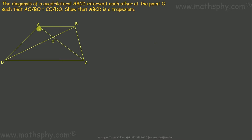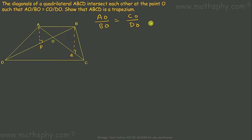To do that, let's draw two perpendiculars: one from A onto BD, call it P, and one from B onto AC, call it Q. Both are perpendiculars, meaning 90 degrees. We have AO over BO equals CO over DO. Rewriting this, AO·DO equals CO·BO, which gives us DO over OB equals CO over OA.